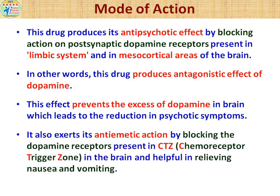Chlorpromazine also shows anti-emetic action. It blocks the dopamine receptors present in the CTZ — the Chemoreceptor Trigger Zone. Ultimately, this provides relief from nausea and vomiting.